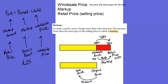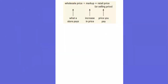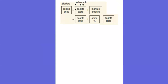To summarize with a couple of formulas: your wholesale price — what a store pays — plus your markup, which is the increase in price, gives you the retail price or selling price. Equivalently, your selling price equals your wholesale price (cost to the store) plus the markup amount, where the markup amount is expressed as some percent of the cost to the store. As long as you use these ideas and formulas as you think through these problems, it will help you greatly.